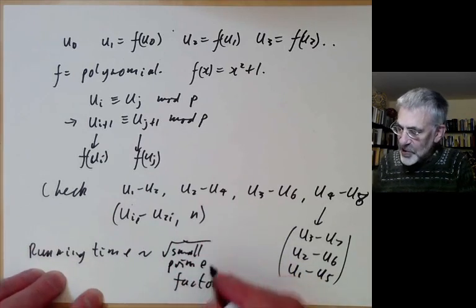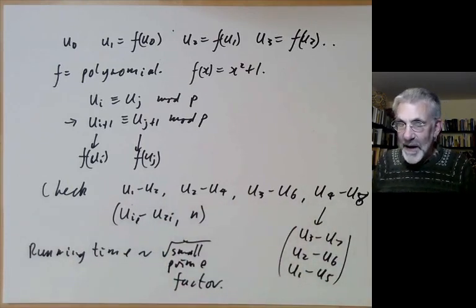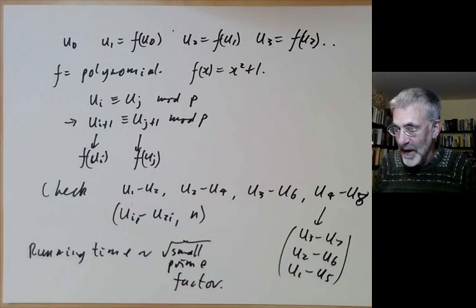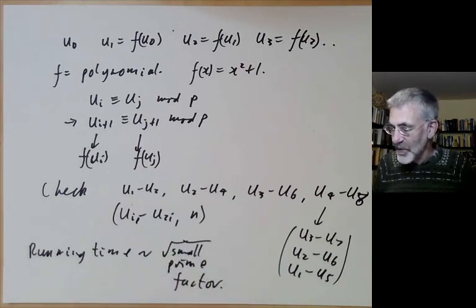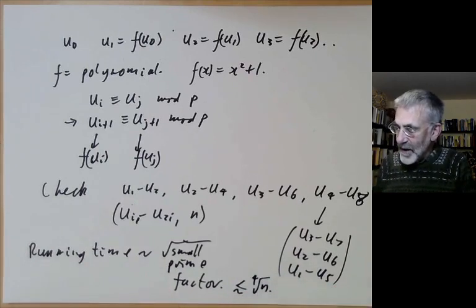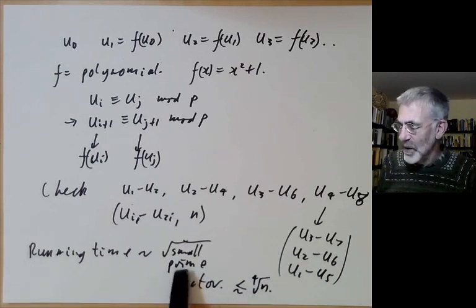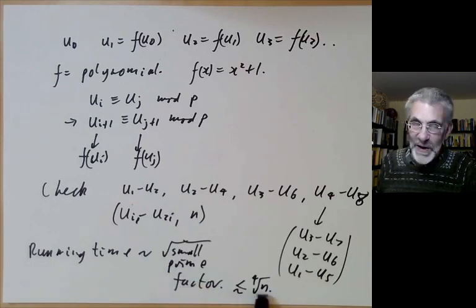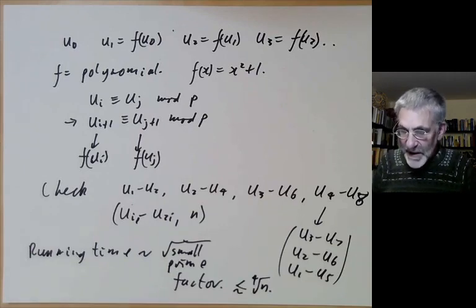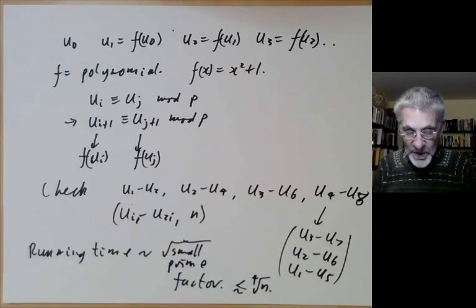This means the number of checks we have to do is the square root of what you might expect, so it ends up showing that the running time is about the square root of the smallest prime factor. It's actually rather hard to estimate the running time. In the worst case, we could be really unlucky, and this method might take an absolutely huge running time. This is a sort of average expected running time, about the square root of the smallest prime factor, which might be sort of less than the fourth root of n. On average, we expect this to be quite a lot faster than checking all primes up to the square root of n.